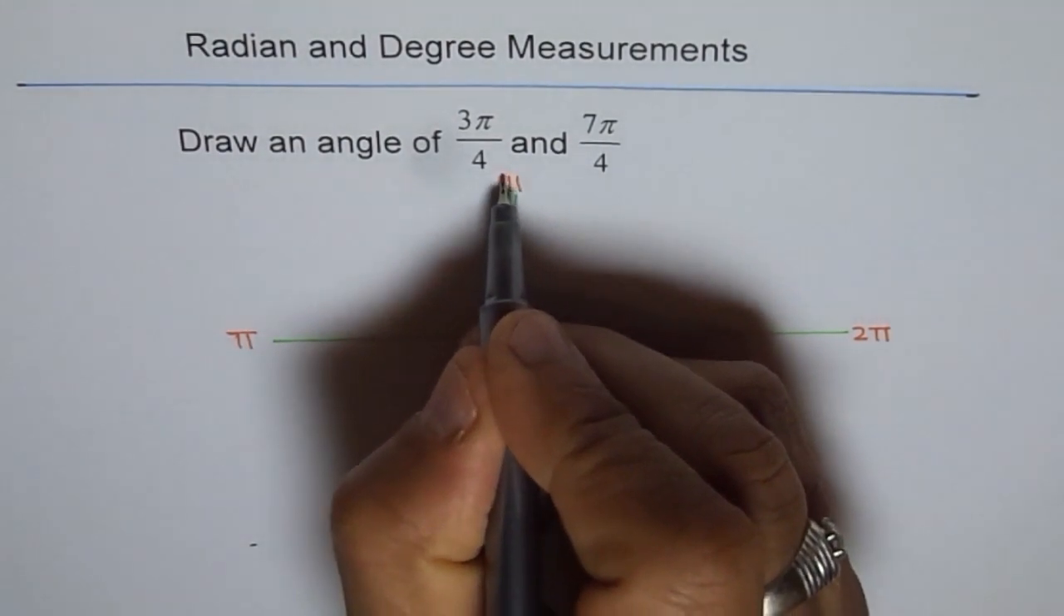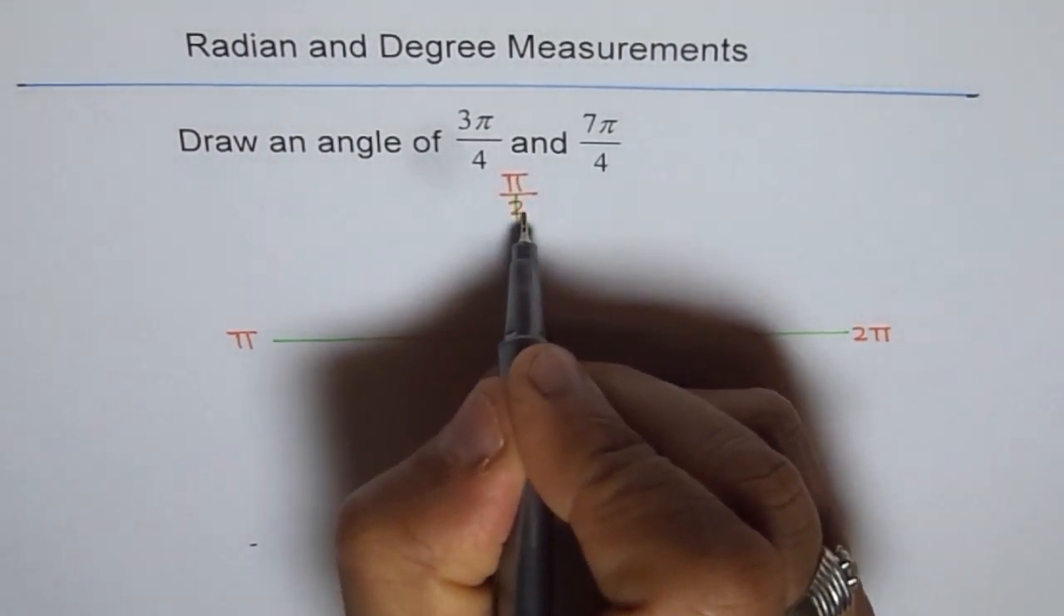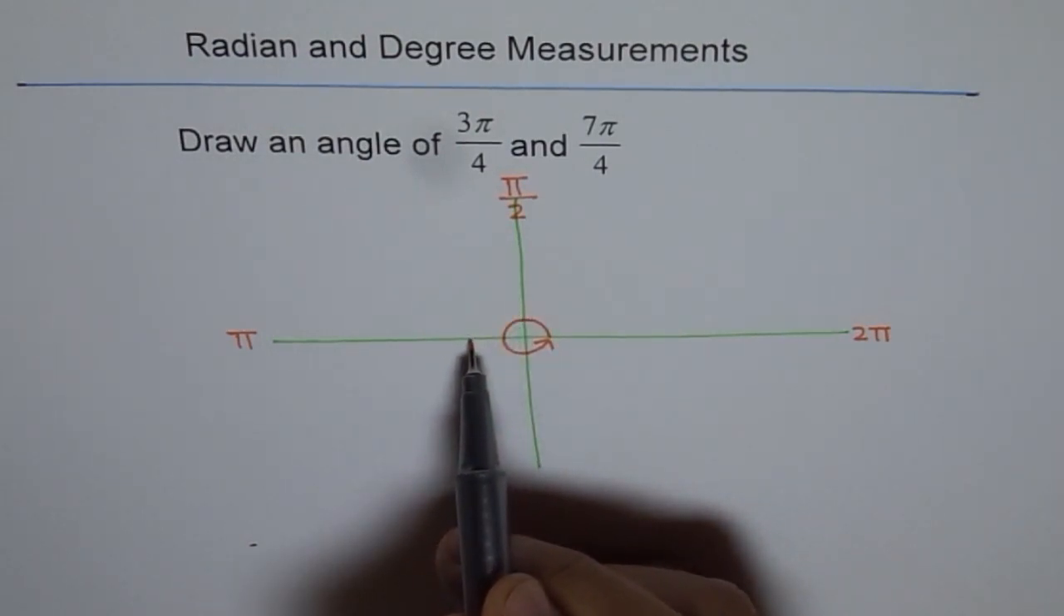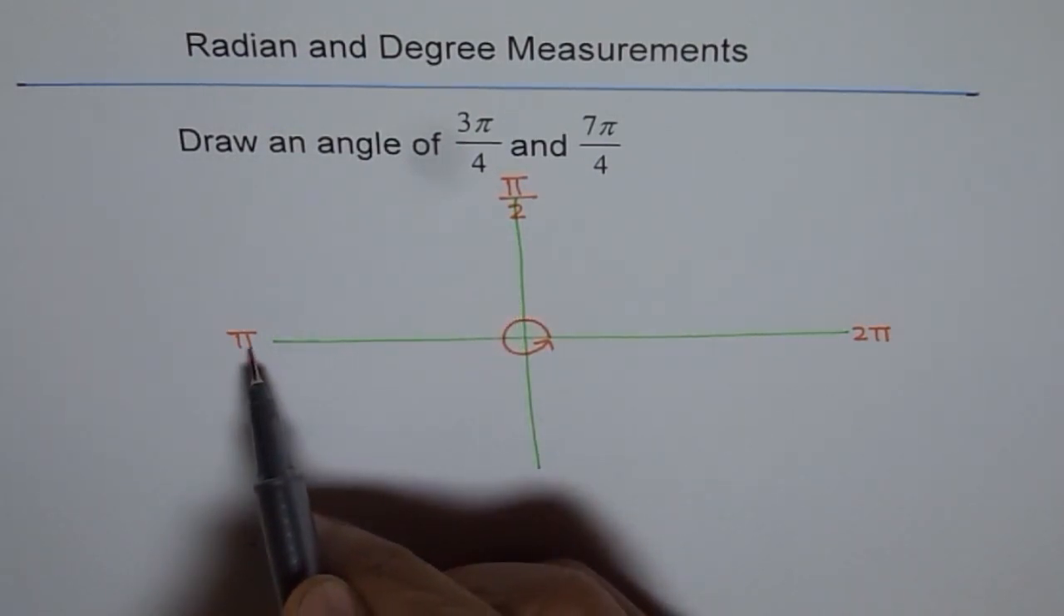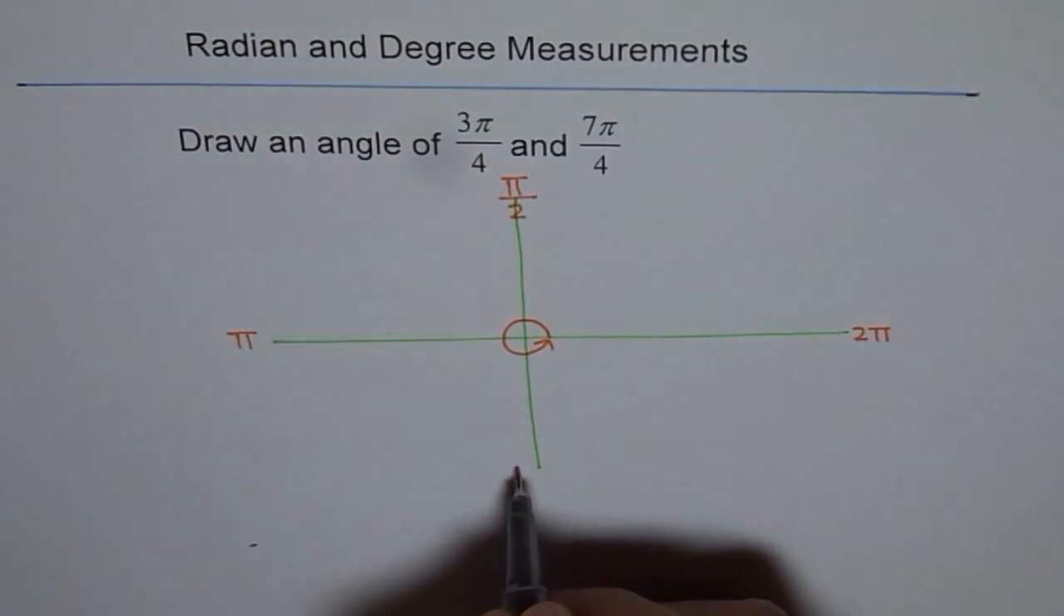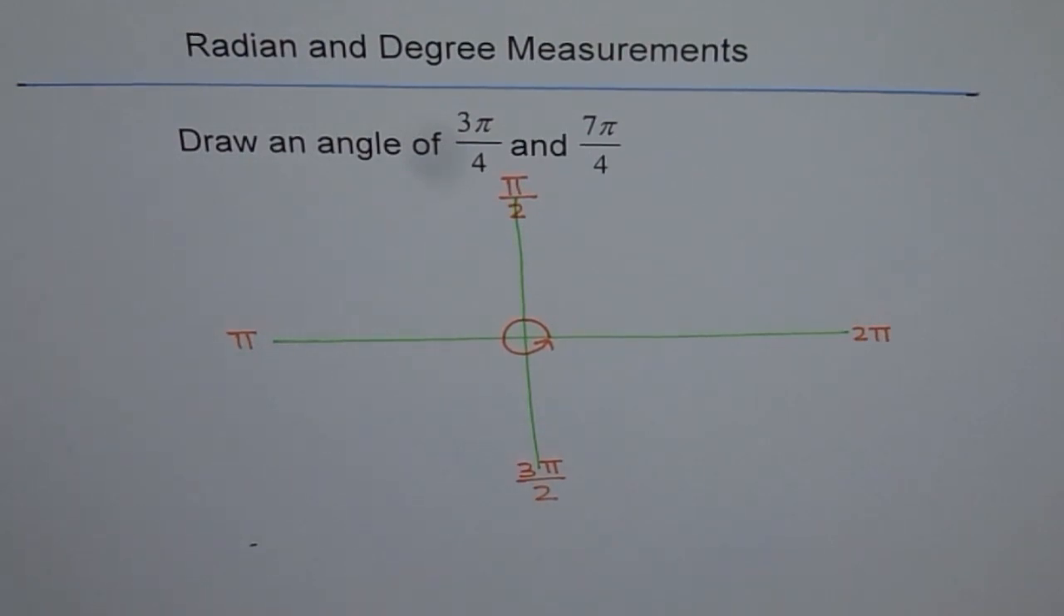Now half of π is π/2. So this is π/2 correct. Now these are all π/2. So this is 1 π/2, 2 π/2. 2 π/2 gives you π. And this one is 3π/2. Let me write here 3π/2. This is going to help us.